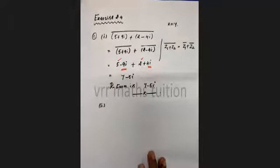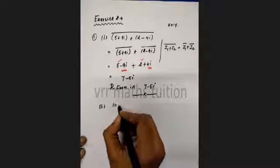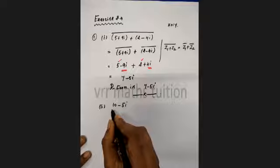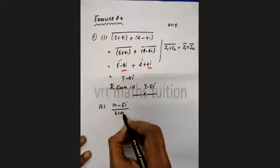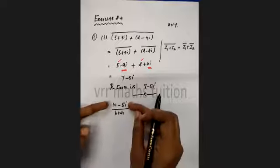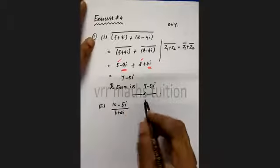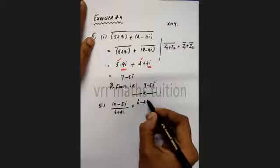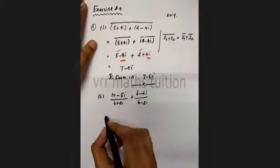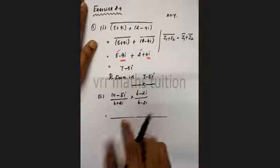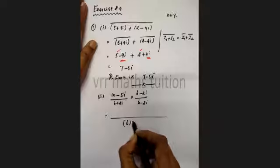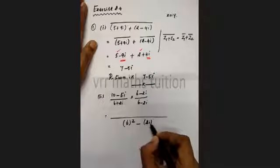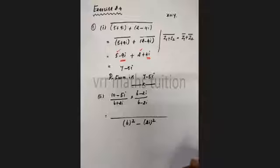Now division number 2. The question is (10 minus 5i) divided by (6 plus 2i). This is a quotient format P by Q. In this model, first multiply the numerator and denominator by the conjugate of the denominator. The formula for denominator: (a plus b)(a minus b) equals a squared minus b squared. The same formula is important to apply here.